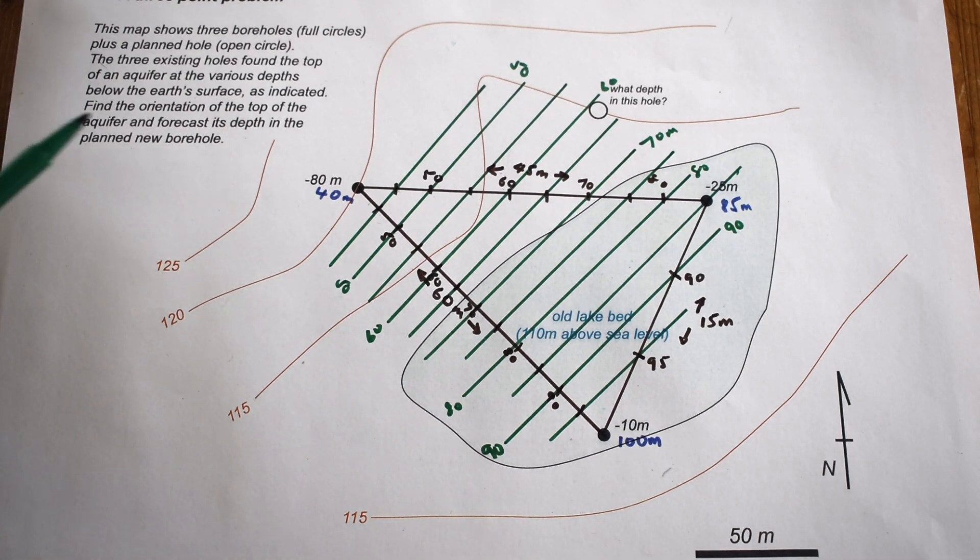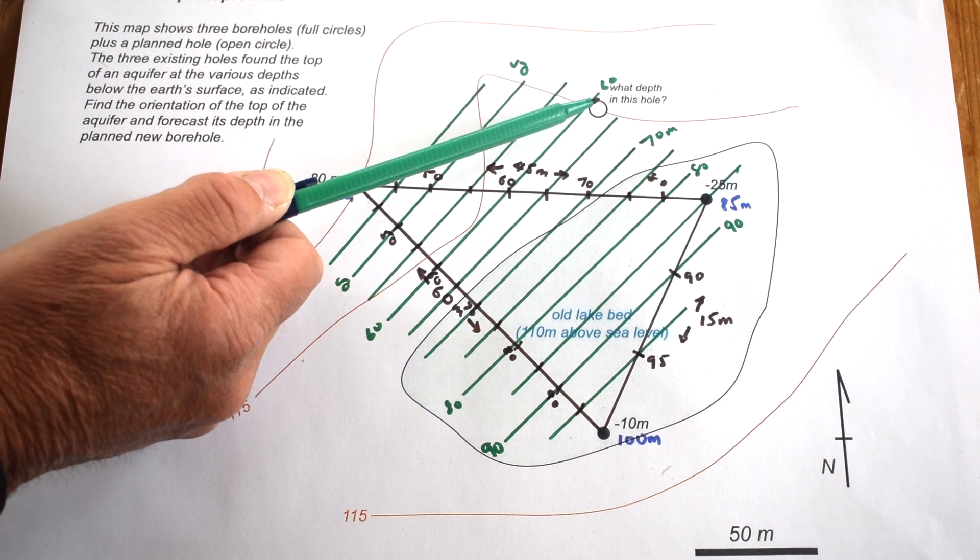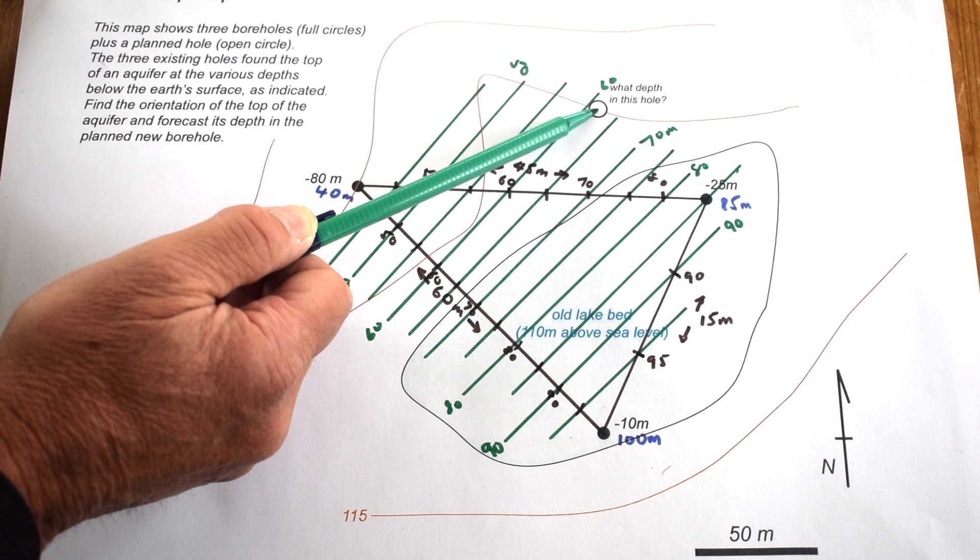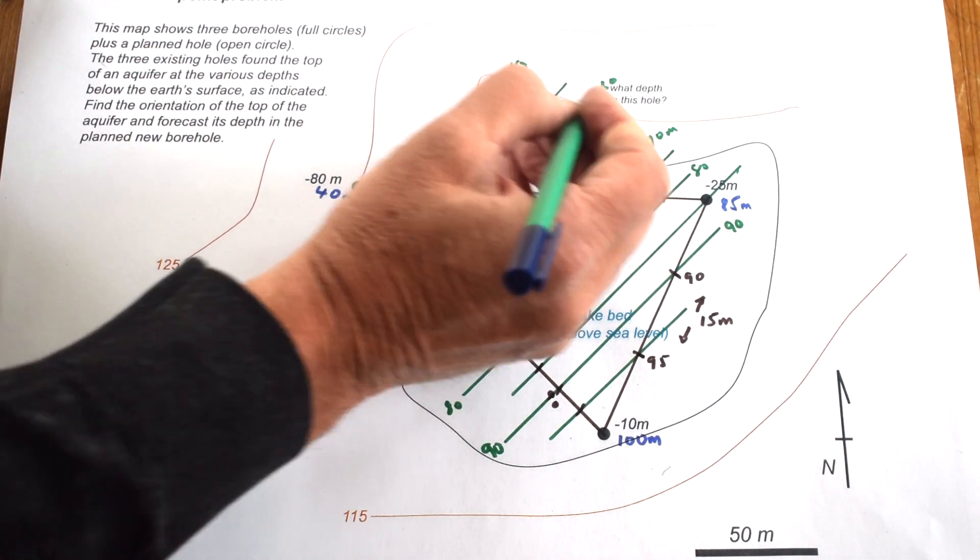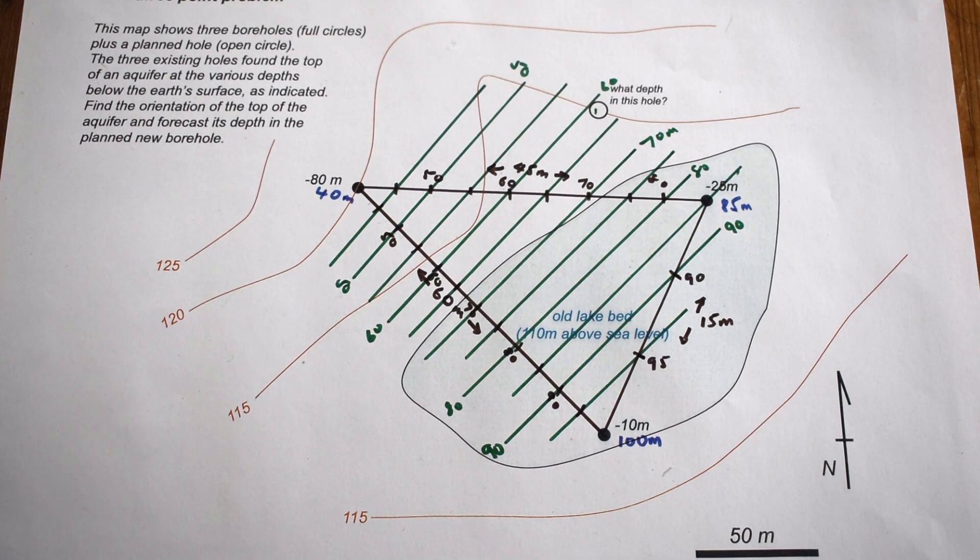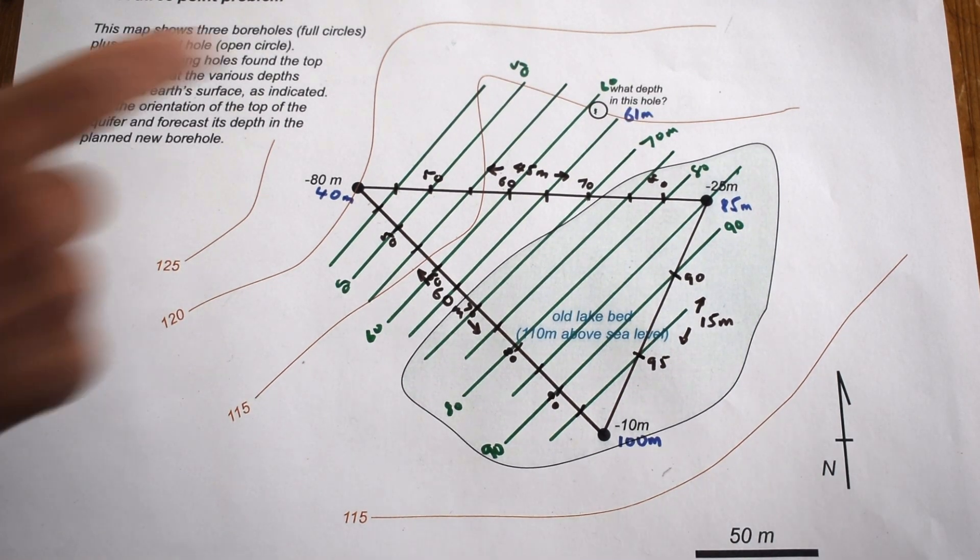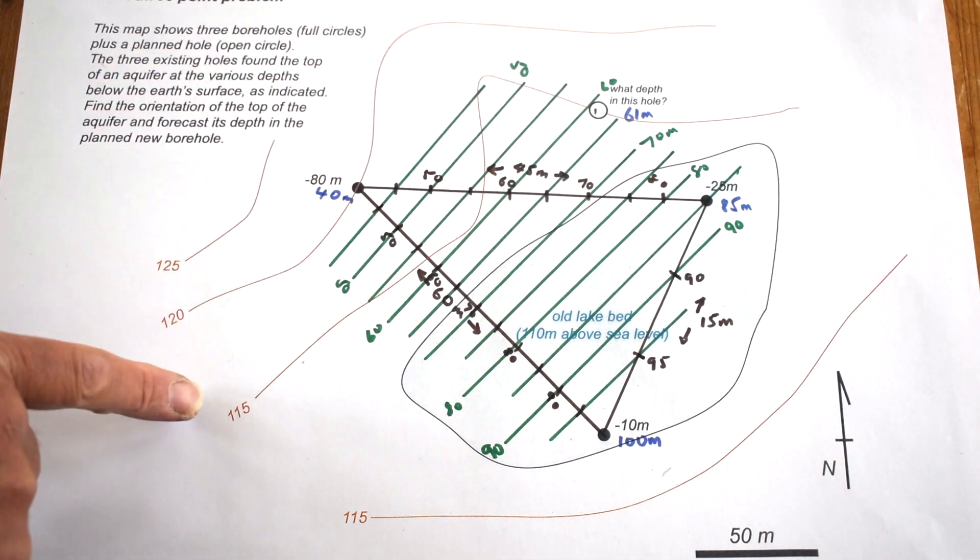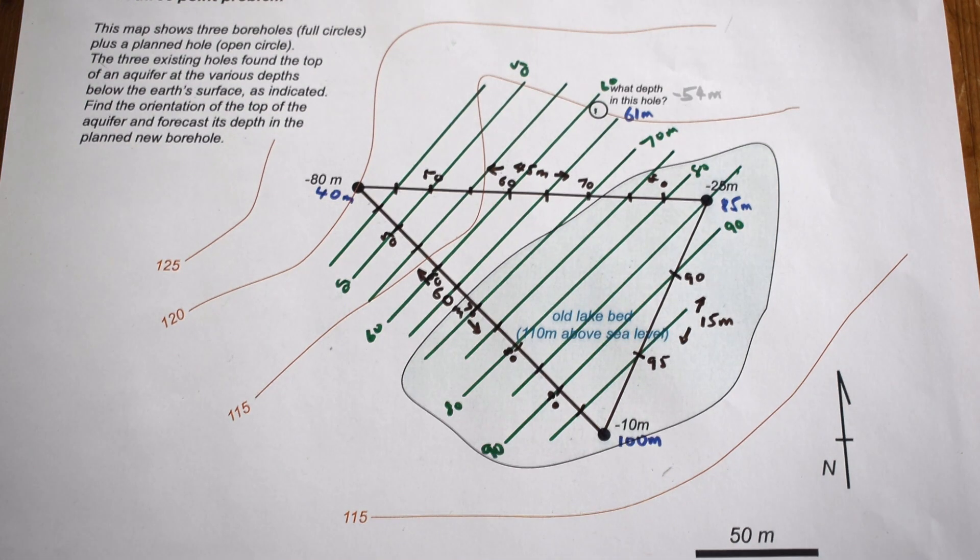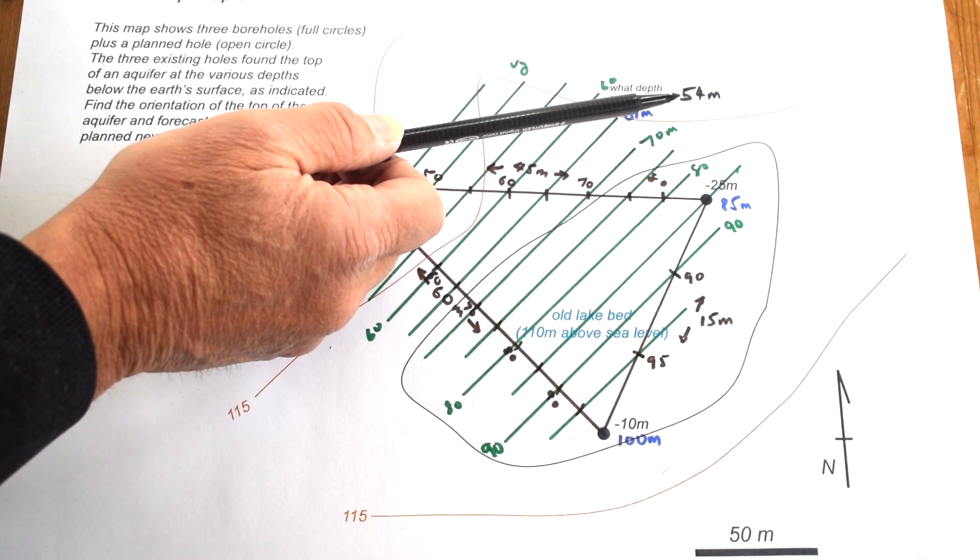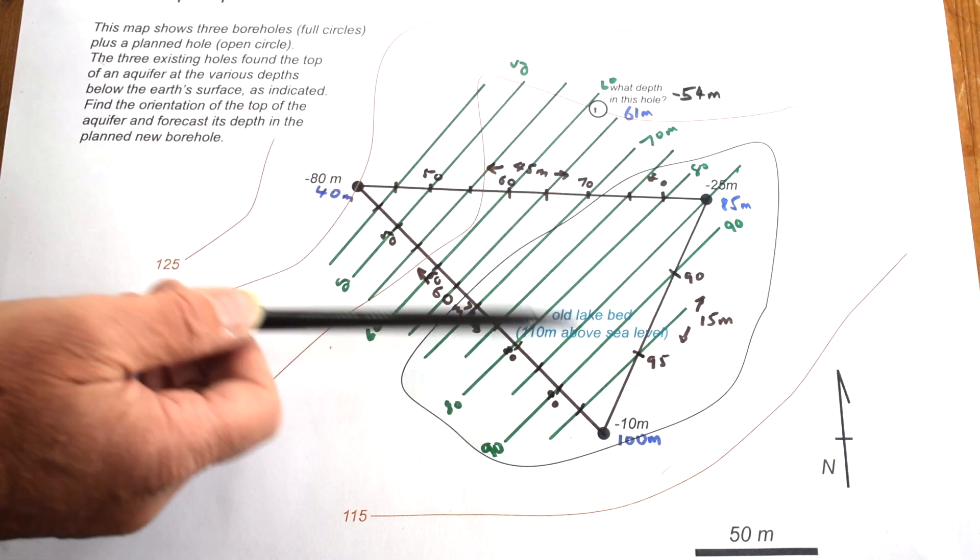We can find the elevation of the aquifer above sea level in this borehole. It's going to be somewhere between 60 and 65 meters, somewhere about there. Let's call it about 61 meters above sea level. That value is the elevation of the aquifer above sea level. What we want to know is its depth in the borehole. The borehole will be drilled at an elevation of 115 meters because it sits on the 115 topographic contour. So that would put it at a depth of 54 meters down, minus 54 meters below the surface, reporting the value to the aquifer in the same way as it's reported in the other boreholes.